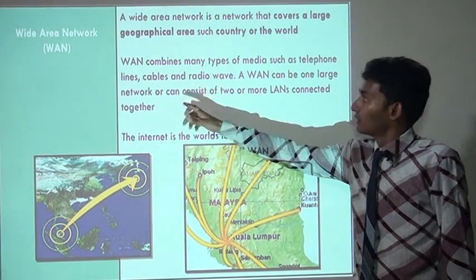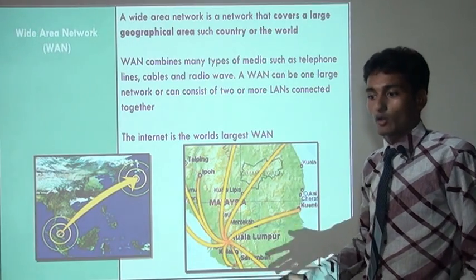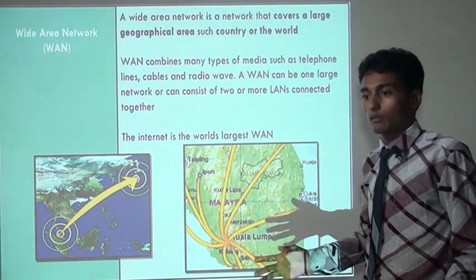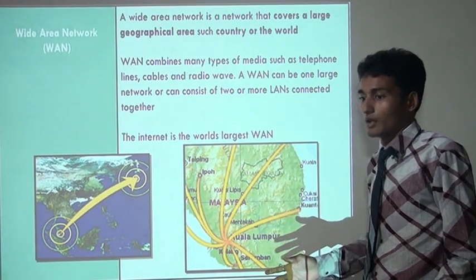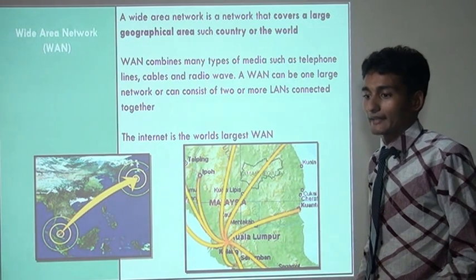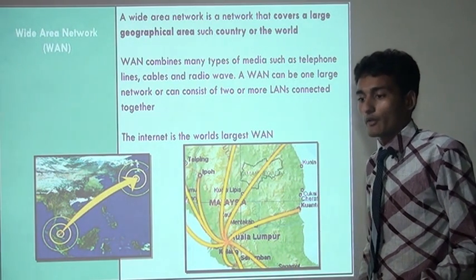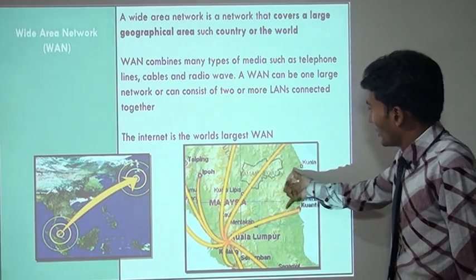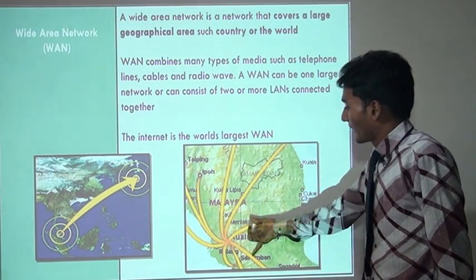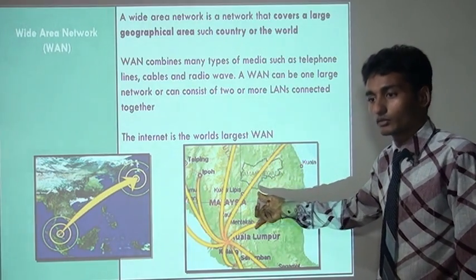Wide area network covers a large geographical area — this means all over the world. It combines many types of media like telephone lines, cables, and radio waves. In this figure, through a WAN we can connect every person in this world.